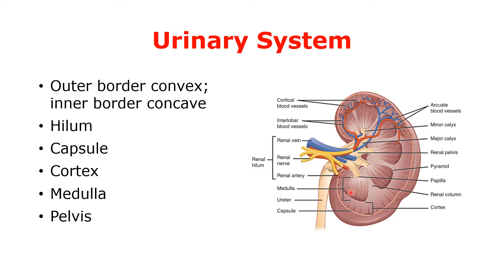The medulla contains pyramids which are made up of nephrons. We will understand about nephrons in the next slide. The upper extended portion of the ureter is called the renal pelvis.